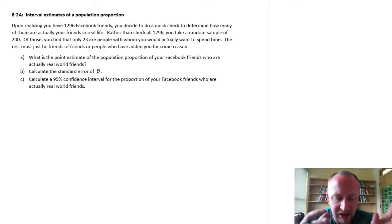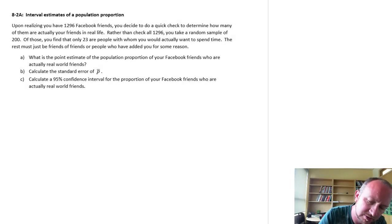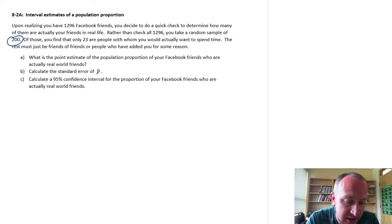And so rather than looking at all of them, it'd take you forever, you just take a random sample of people in your list of Facebook friends, 200 people. So here we have a sample of 200. And of those, we find that only 23 of them are people that you would actually want to spend time with, that you'd actually want to have an interesting conversation with. And so the rest of these people in that sample, they must just be friends of friends, or people who have added you, or who knows, for some reason, people that have somehow connected with you.